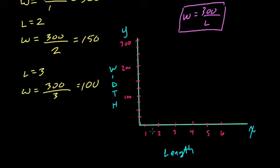So we'll plot these points. The first point we have 1, 300 all the way up here. When it's 2, we go over to 150 right here. When it's 3, we had 100.